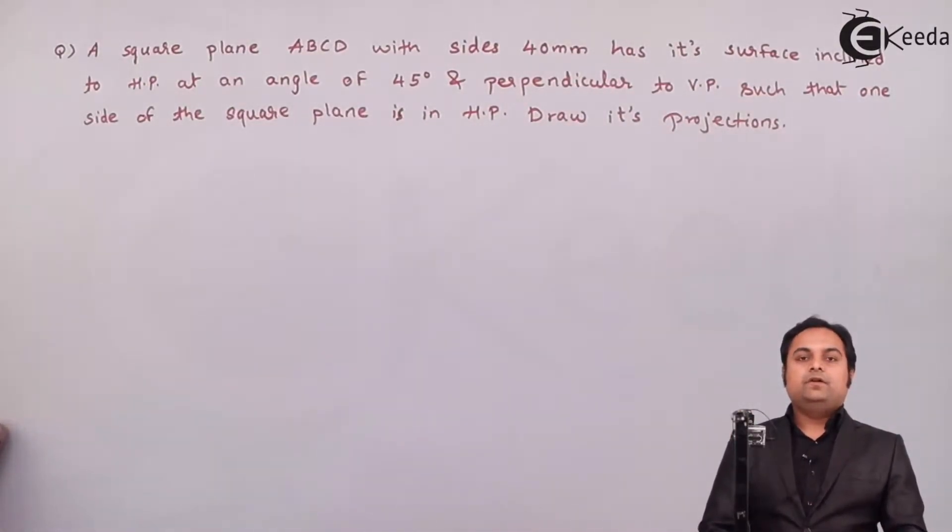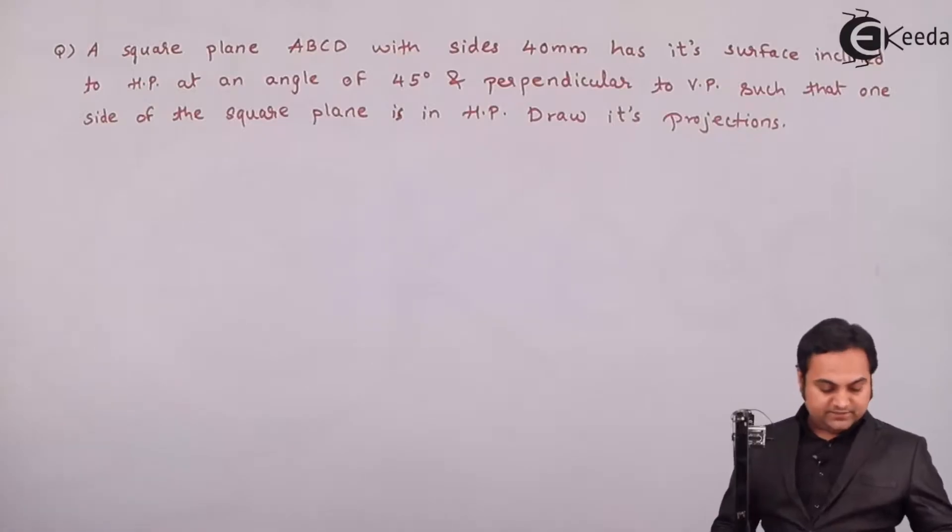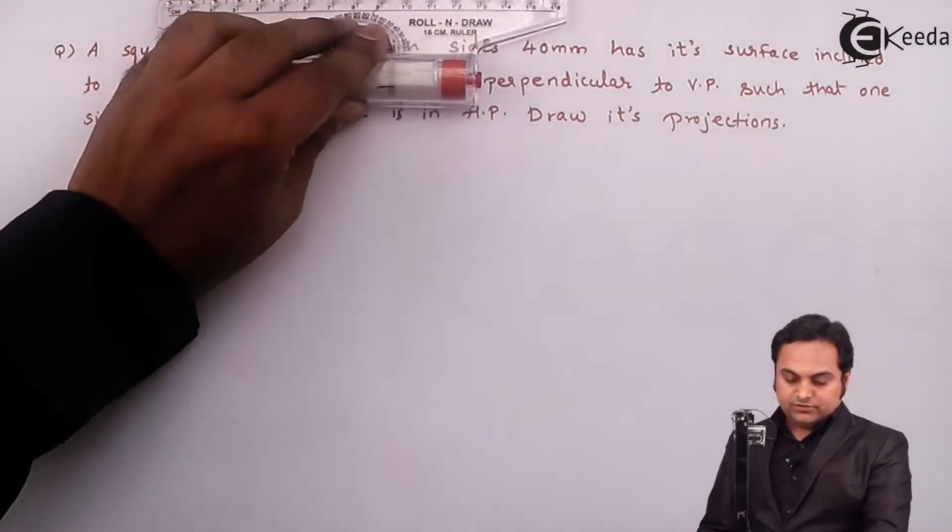This is the question in front of us. Now first I'll draw the XY line, VP and HP position, and then explain what we have to do in this question. So first drawing the XY line.